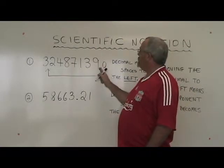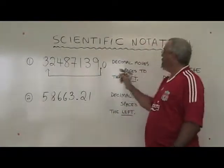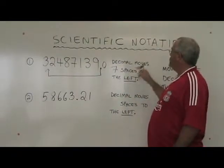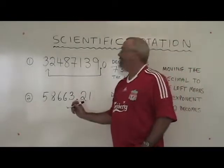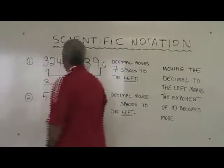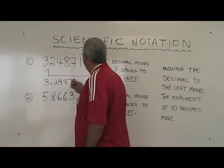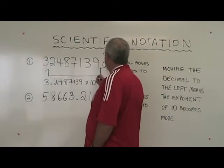This means we're moving our decimal seven spaces to the left. So I'll write that here. The decimal moves seven spaces to the left. Our new number in scientific notation is 3.2487139 times ten to the power of seven.